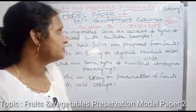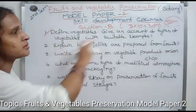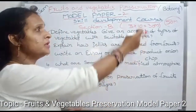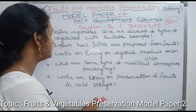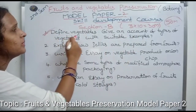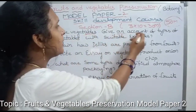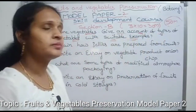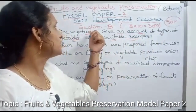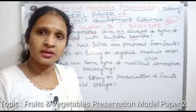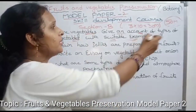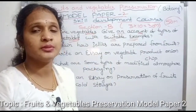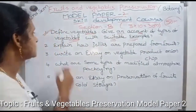Next is Section B — Section B has 10-mark essay questions, each question is 10 marks, totaling 25 marks. First question: define vegetables and give an account of the types of vegetables with suitable examples. First, mention the definition of a vegetable, then give an account of the types of vegetables with examples.